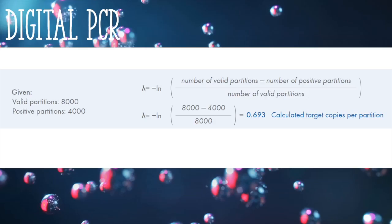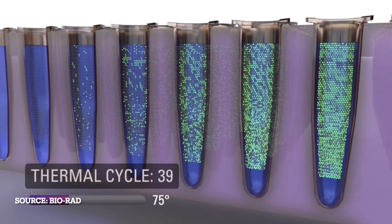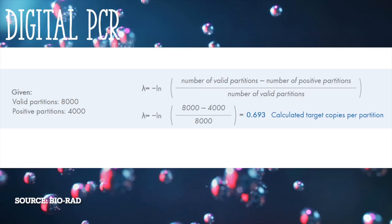Poisson statistics allows the number of positive and negative reactions to be measured precisely. As the target molecule is distributed randomly across all available partitions, Poisson distribution estimates the average number of molecules per partition—zero, one, or more—and calculates the copies of the target molecule per positive partition.